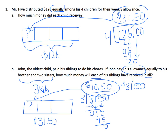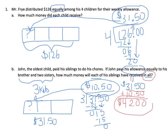Now I want to figure out how much each sibling will have received in all. From Mr. Fry, the children each get $31.50. From John, they're going to get another $10.50. So when I add that up, each child will get $42.00 in all.